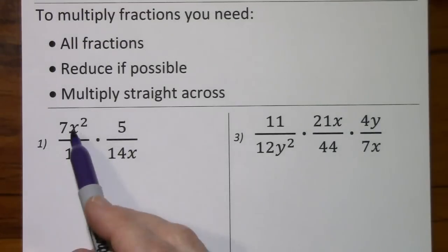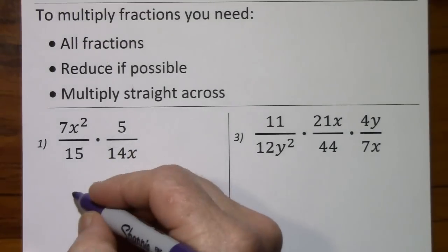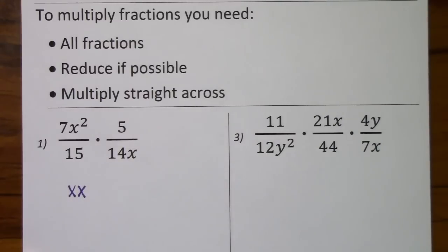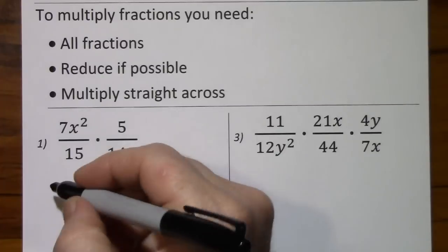Starting with our first problem, for x squared, I'll write that as x times x, and I'll bring everything else down.